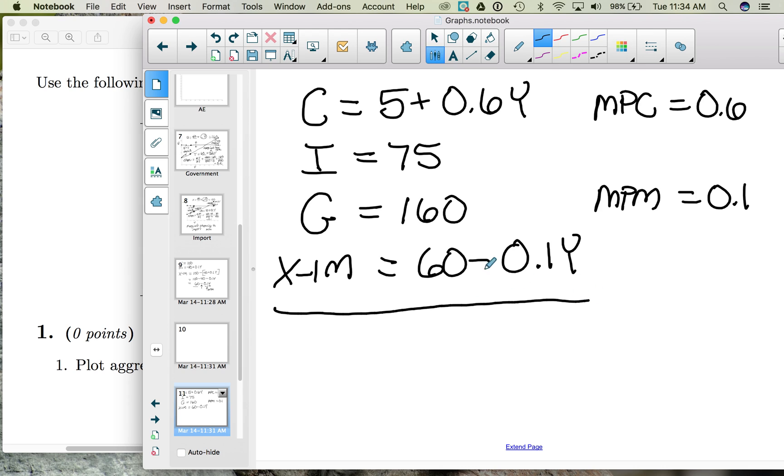Well, ultimately we want to find aggregate expenditures. Aggregate expenditures is total spending—it's C plus I plus G plus X minus IM. So we can find the formula for aggregate expenditures by adding up these four formulas. To add four formulas, we take all the numbers that do not contain a Y: 5 plus 75 plus 160 plus 60. If we add those four numbers together we get 300.